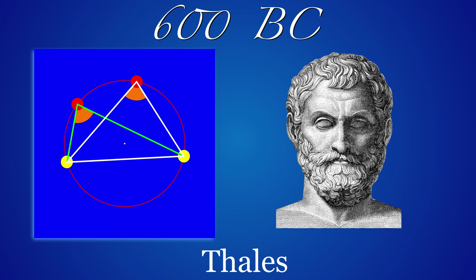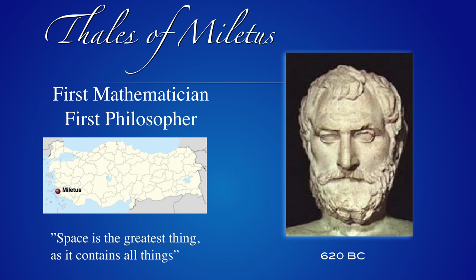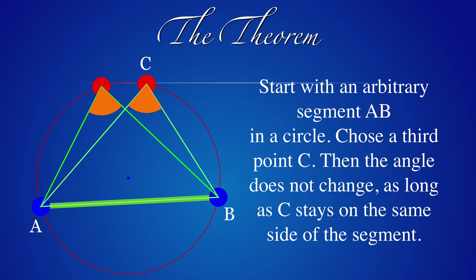He drew triangles into a circle and noticed a strange thing. Before we come to that, one has to appreciate the person as Thales was not only a mathematician, but also a philosopher. He thought that space is the greatest thing as it contains all things. In some sense, he anticipates the notion of a universe, which we still today try to understand.